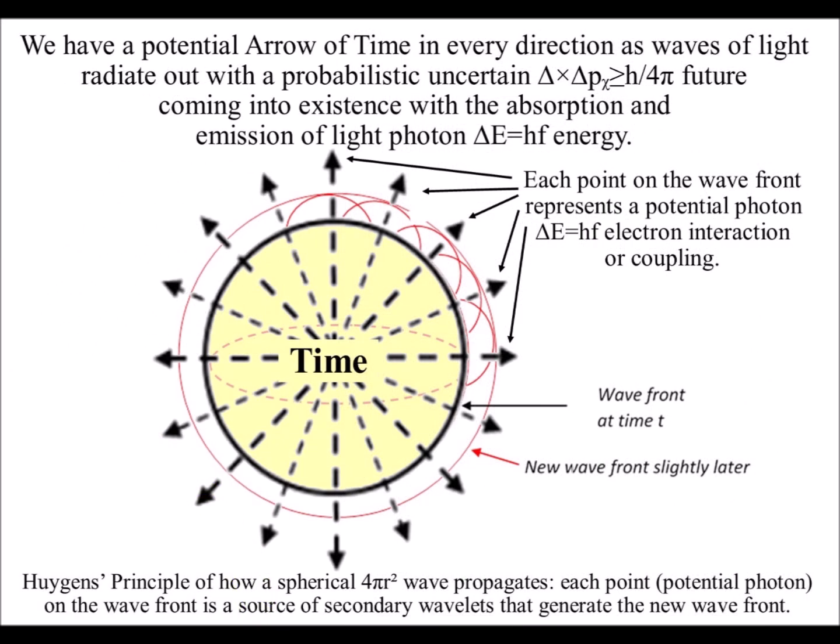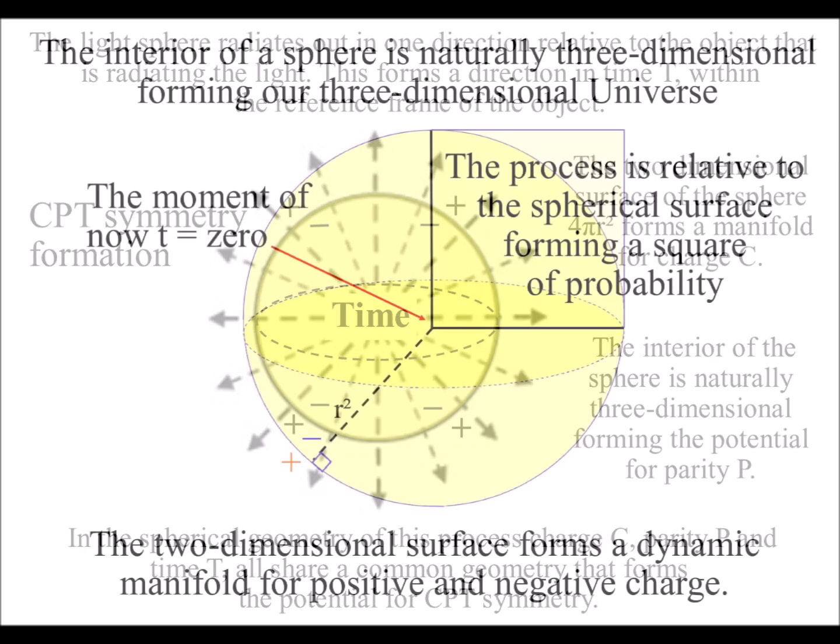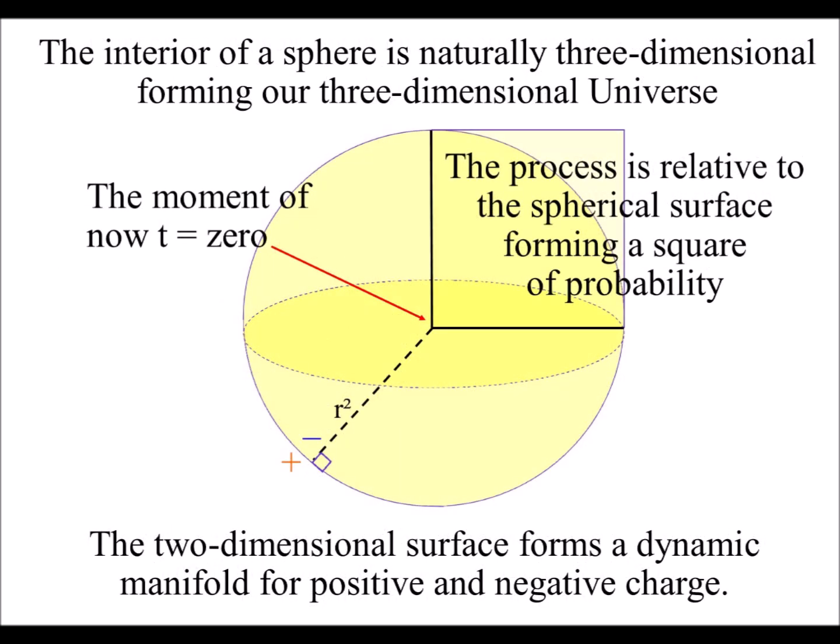We can think of every point as a potential for a photon-electron interaction or coupling. The interior of the sphere naturally forms our three-dimensional space. The spherical surface forms a boundary condition or manifold for positive and negative charge as the future unfolds with the exchange of quantized energy.